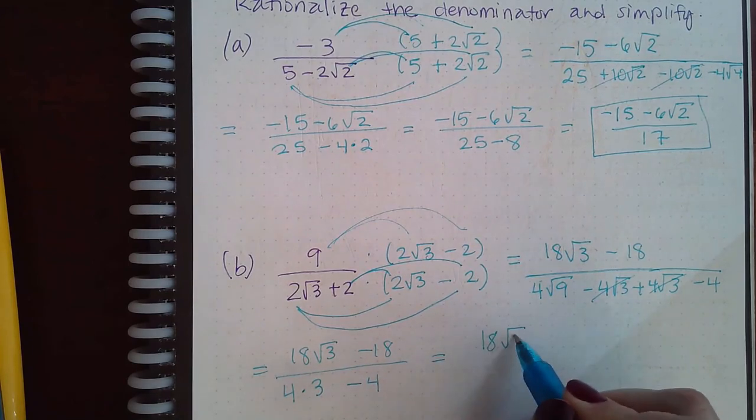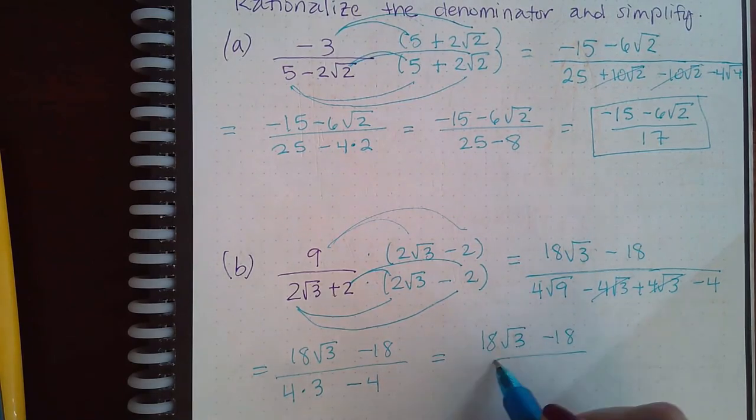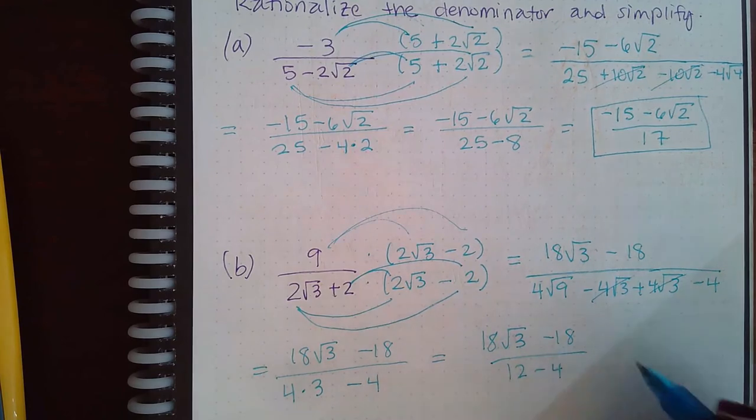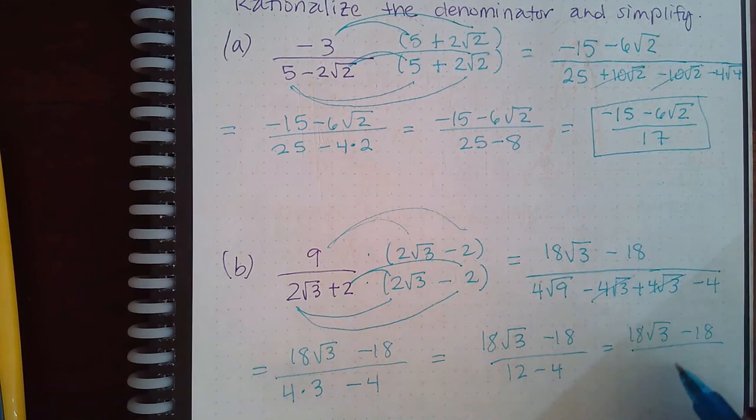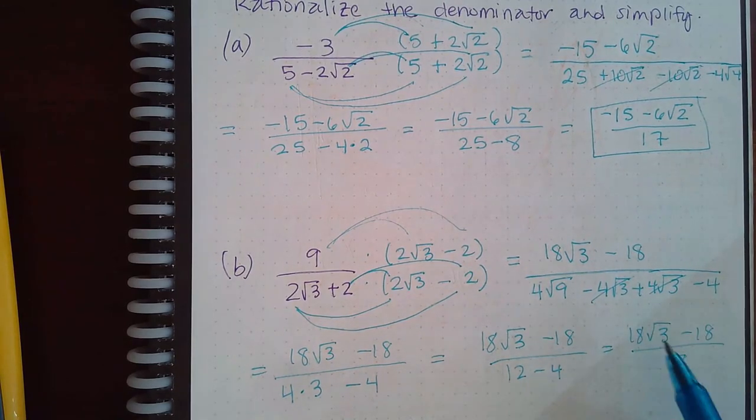So 18 square root of 3 minus 18 over 12 minus 4. So that simplifies into 8 in the denominator. Now these will reduce. So I do have to keep going.